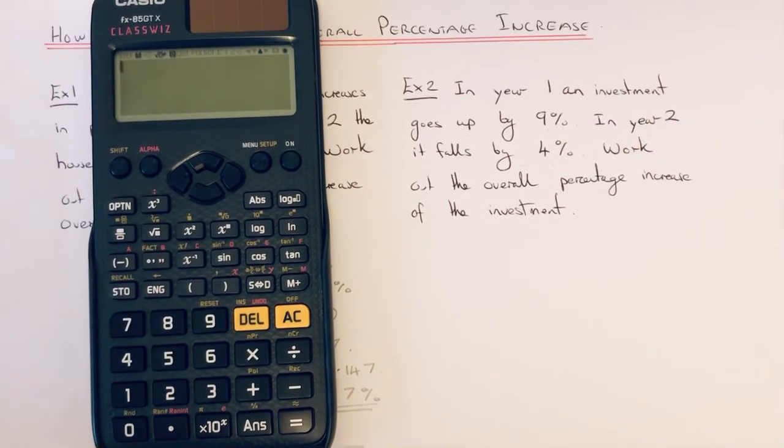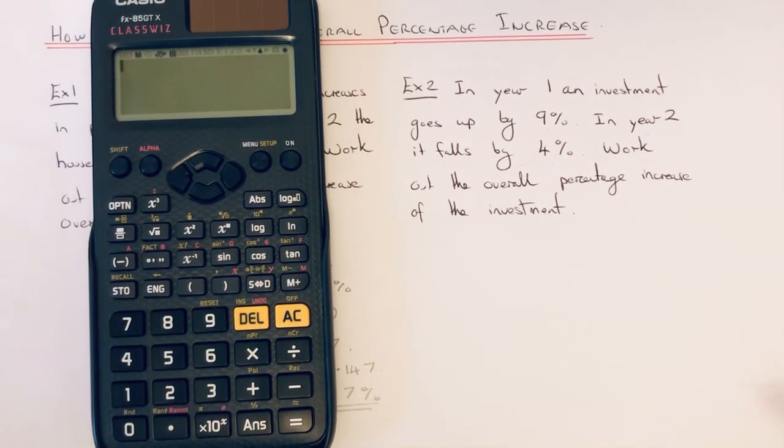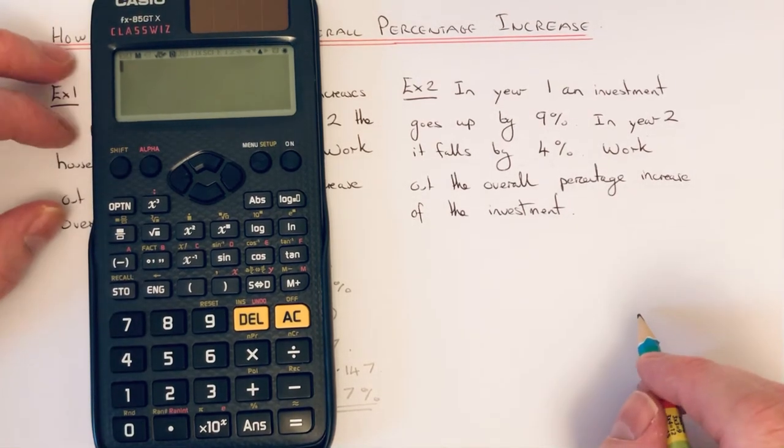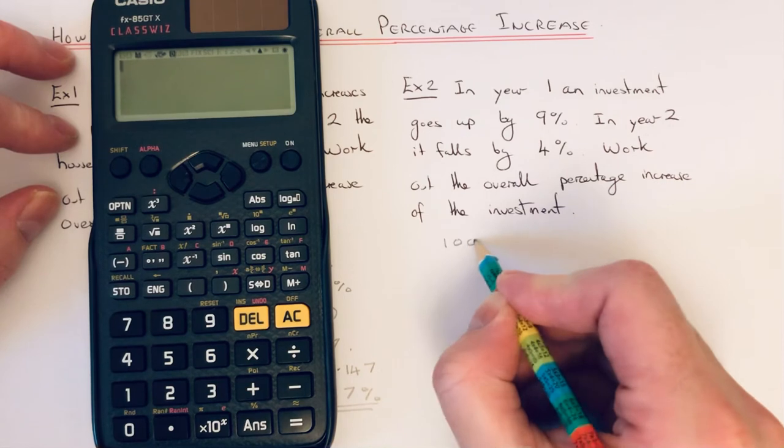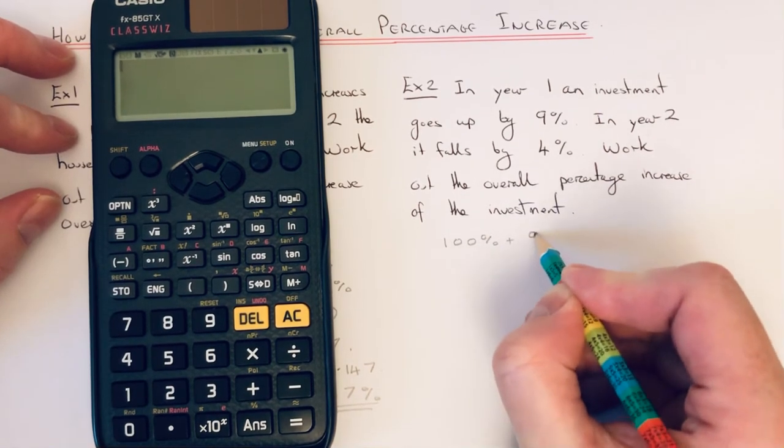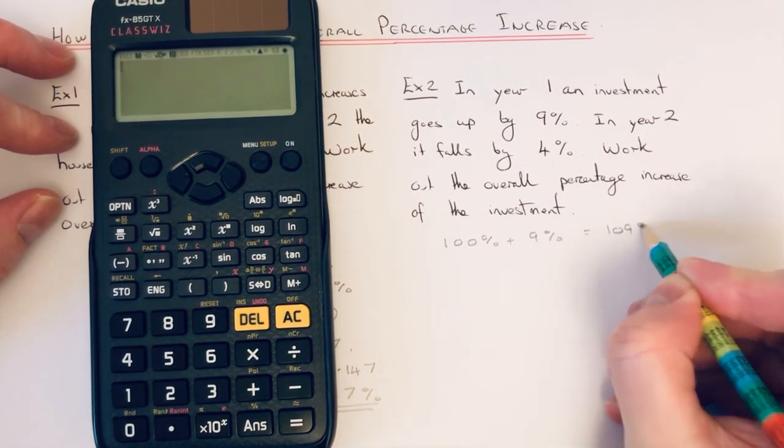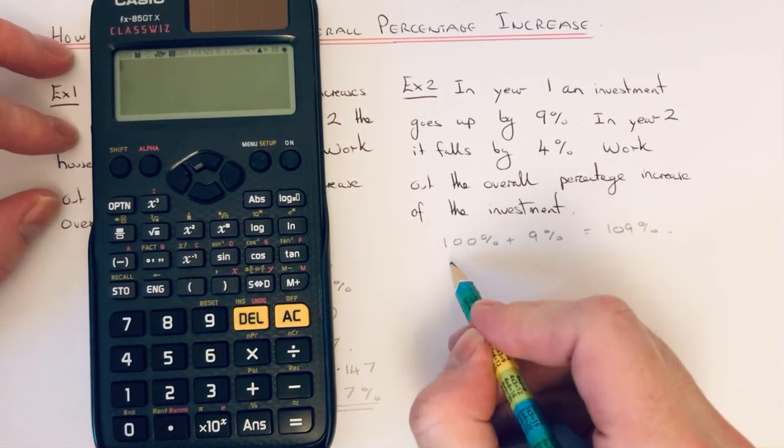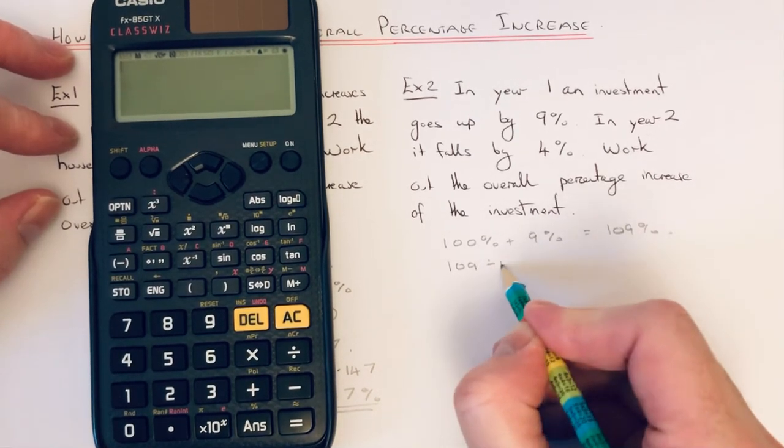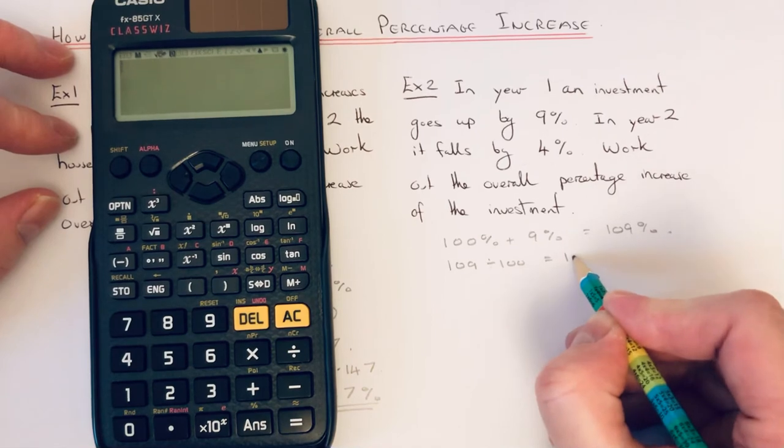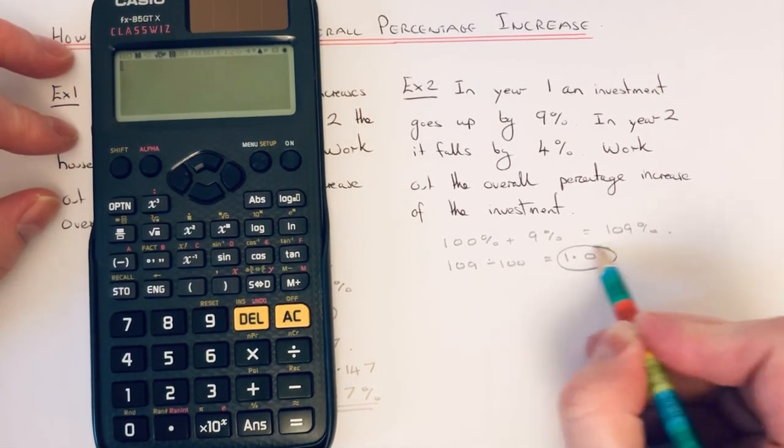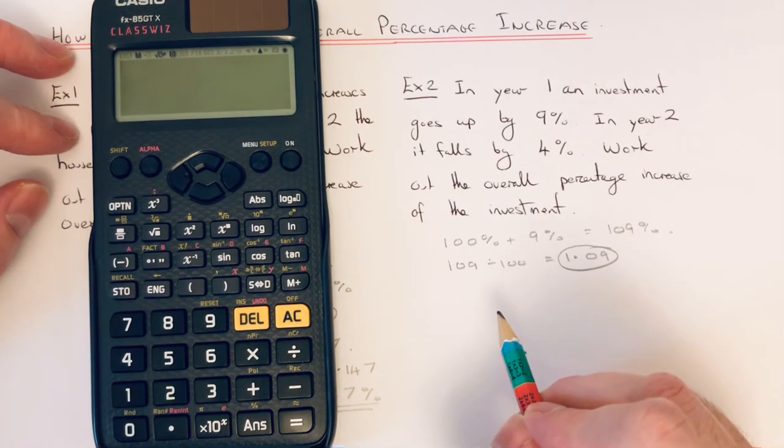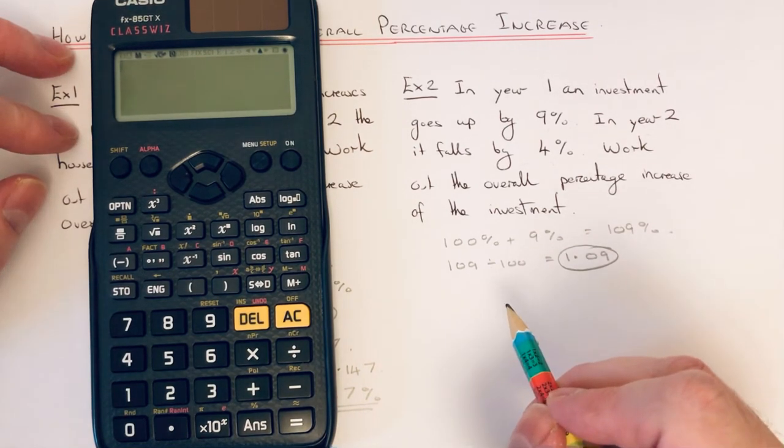We've got to work out our decimals. In year 1 it goes up by 9%, so this is an increase. We add the percentage onto 100, which is 109. So that's 1.09. That is our first decimal multiplier.